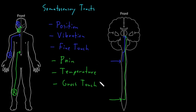Pain, temperature, and gross touch sense from the face and some other parts of the head come into the brain stem through cranial nerves, and that information actually takes a pathway that goes down first, then crosses, and then goes up to about the same place as information from the rest of the body. And lastly, position sense, vibration sense, and fine touch sense from the face and some other parts of the head will also come into the brain stem through cranial nerves, cross over to the other side, and go to about the same place deep in the cerebral hemisphere.